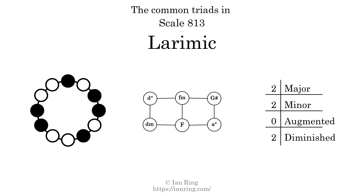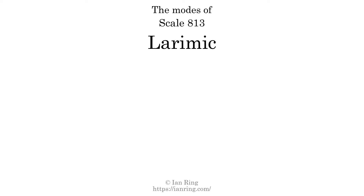Here is a Hamiltonian path of parsimonious voice leading that uses all the triads. This scale has 6 modes. The first mode is itself. The second mode is scale 1227, also known as the Krimic. It sounds like this.